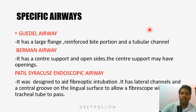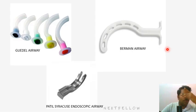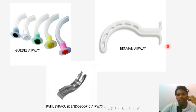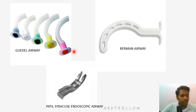Specific oropharyngeal airways: the classic airway is Guedel's airway. Other special airways include Berman's airway and Patel-Syracuse endoscopic airway. In NEET PG exams, they often show a picture and ask you to identify it. Remember the shape, flange, body, bite block, channel, and tip. Airways are color-coded by size — the smallest size triple-zero is pink, and sizes go up from there.